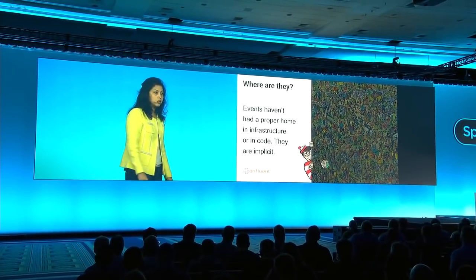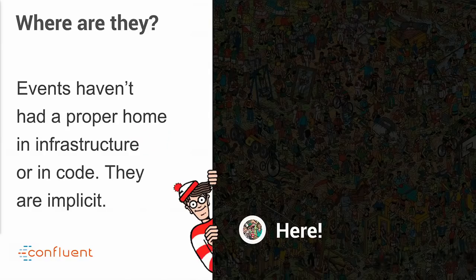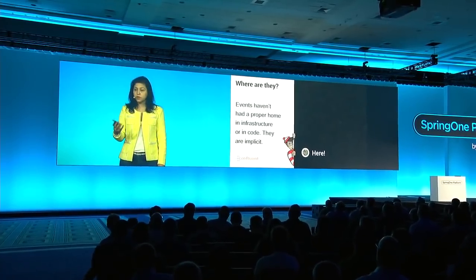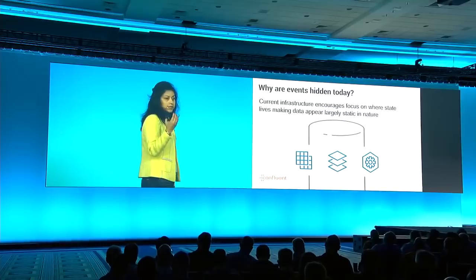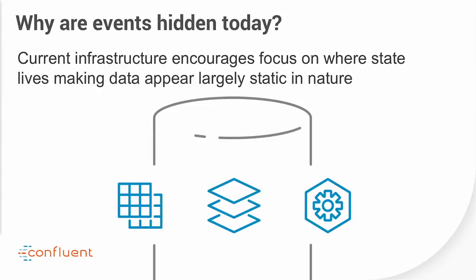So if events are so powerful, where are they? Events haven't had a proper home in infrastructure. They don't occur in relational databases or RPC systems in any real way — they're implicit, hidden somewhere in your code. You often don't see an object named 'event.' What we're trying to solve with Kafka is to give events a real home within a business. Infrastructure today gives us tables, caches, and applications to store state, but much of database logic exists to make it seem like data isn't changing — when really it is underneath the covers. The explicit representation of change has been missing.